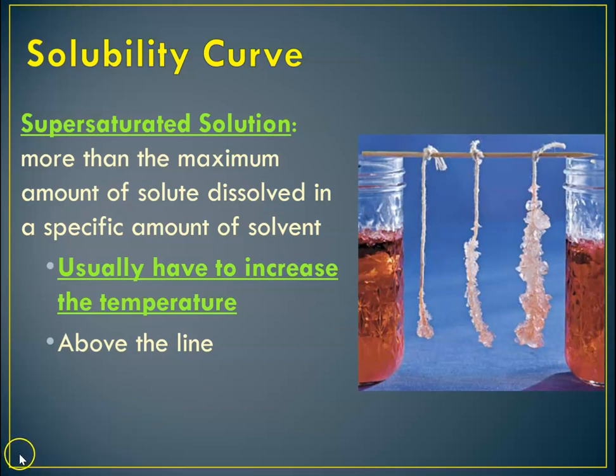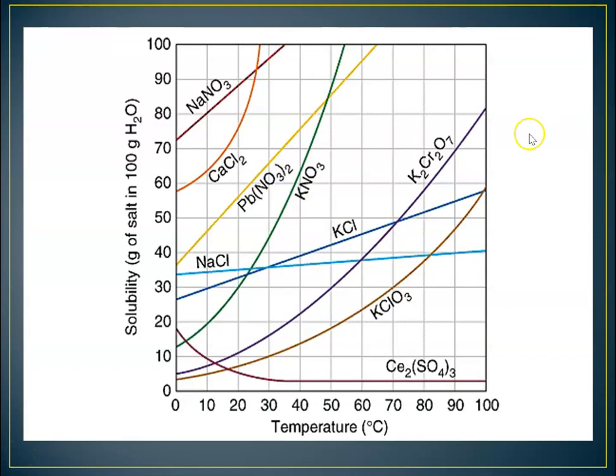So let me go back and show you what that looks like on the graph. Here, I don't have sugar on this chart. But let's say I dissolved 95 grams of lead to nitrate in water, and I heated it up to 60 degrees to do that. Now I'm going to cool it down. And as I cool it down to room temperature, which is around here, I now have 95 grams in, which is well above the line. That is what we call a supersaturated solution.